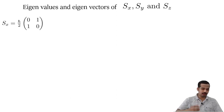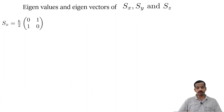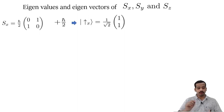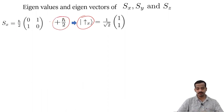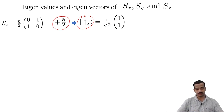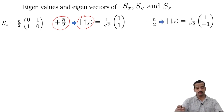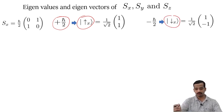The S-x matrix is given by (h-bar/2) times the matrix [0, 1; 1, 0]. The eigenvalues of S-x are plus h-bar over 2 and minus h-bar over 2. Corresponding to plus h-bar over 2, the eigenvector is spin-up-x, written as (1/root 2)[1, 1], where 1/root 2 is a normalization factor. That means spin-up-x is an eigenstate of S-x with eigenvalue h-bar over 2. The other eigenvalue is minus h-bar over 2, with eigenvector spin-down-x equal to (1/root 2)[1, -1].